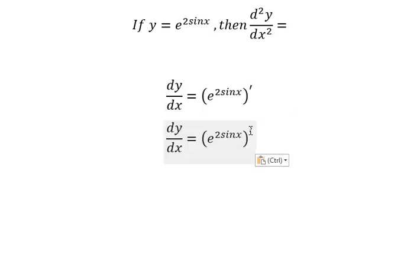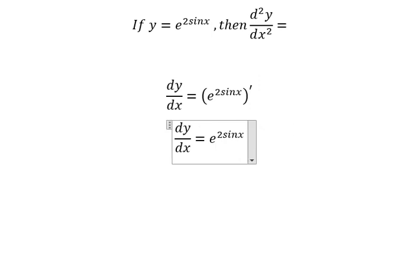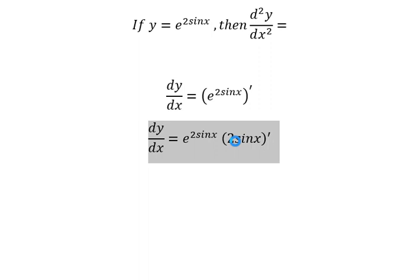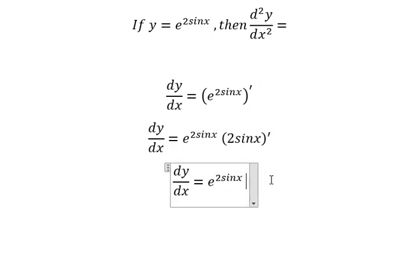If we do first the derivative, we keep the same e to the power of two sin x. Later, we need to do the derivative of two sin x. So the derivative of sin x is cosine x.